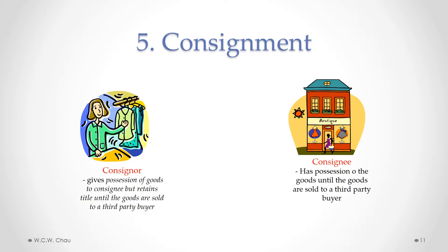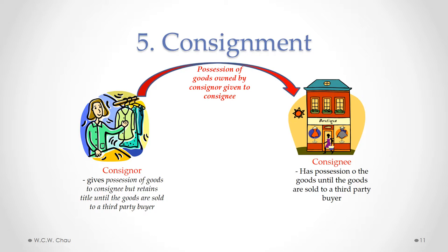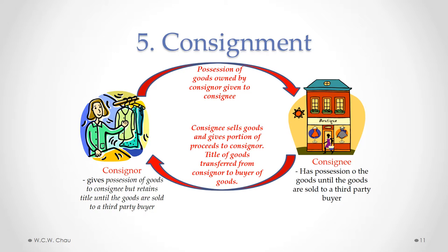Say you have some old clothing you want to sell at a second-hand clothing store. You bring your clothes to the store and consign them — you give possession of the goods to the store, which is called the consignee, while you are the consignor. You give possession but not title of the goods. When the consignee sells the goods to a customer, it gives a portion of the proceeds to you, the consignor, and at the time of that sale, the title of the goods transfers from the consignor to the buyer. That's what we call a consignment.